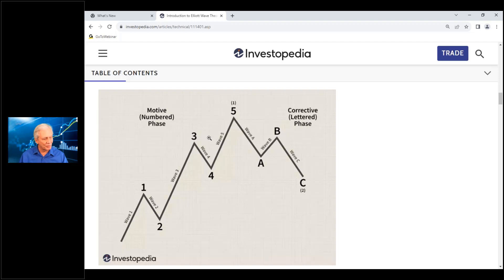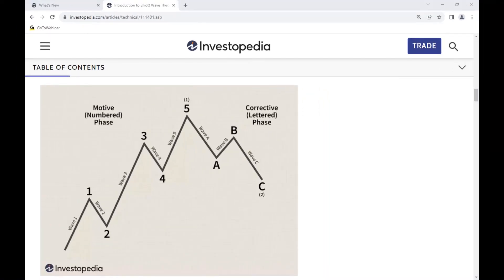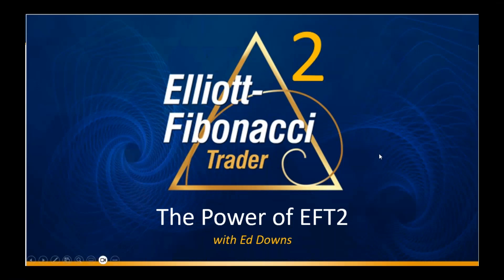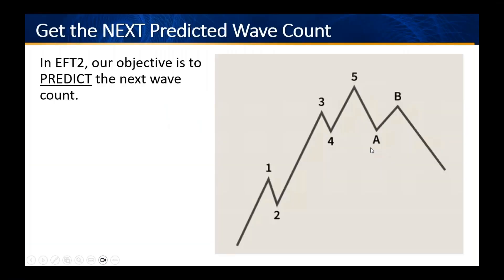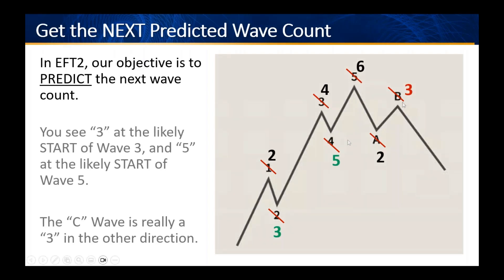If you search Elliott Waves on Google, you'll see the same marking structure — everybody marks Elliott Waves the same way, with numbers placed at the end of each wave. But in EFT2, we do it differently because we don't want to mark things in hindsight — we want to get them ahead of the move. We mark the predicted wave ahead of time: when wave three starts, we call it a three; when wave five starts, it's a five. It doesn't do you any good to see that they formed at the end of the move — you have to know before the move happens.